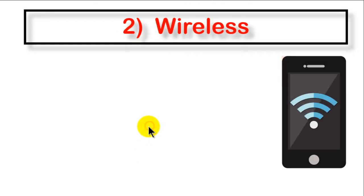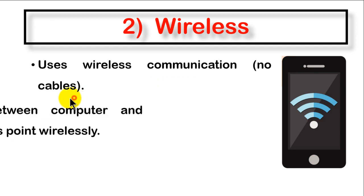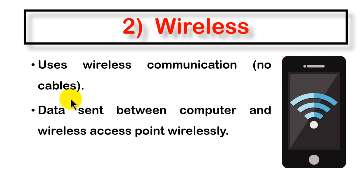Now let's move to the second type of network connection, which is wireless. You can see in the picture the shape of the wireless connection. Wireless means there are no cables connected to your devices — you connect your computer using wireless communication technology. Data is sent between the computer and the wireless access point wirelessly.